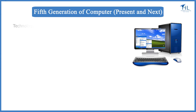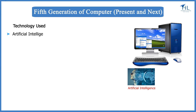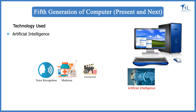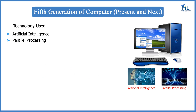The technology behind the fifth generation of computers is Artificial Intelligence, or AI, which allows computers to behave like humans. It is often seen in programs like voice recognition, areas of medicine, and entertainment. This generation uses parallel processing, which allows several instructions to be executed in parallel instead of serial execution, resulting in faster processing speed.